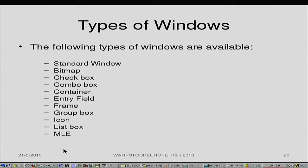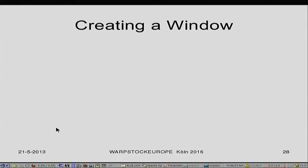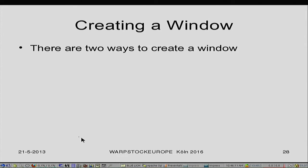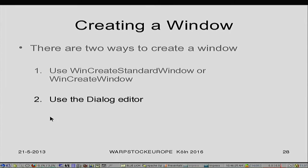There are many types of windows you can create very simply — you say create a button, create a list box, create some text. That was the demo we did at the beginning. Basically, there are two ways to create a window: use create standard window or create window and then say what type of window you want to create. Or we use the dialog editor. Using create window, you have to do a lot more work yourself — you have to tell the positioning of the window.